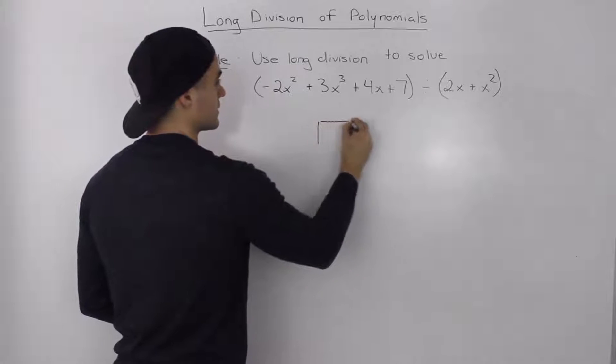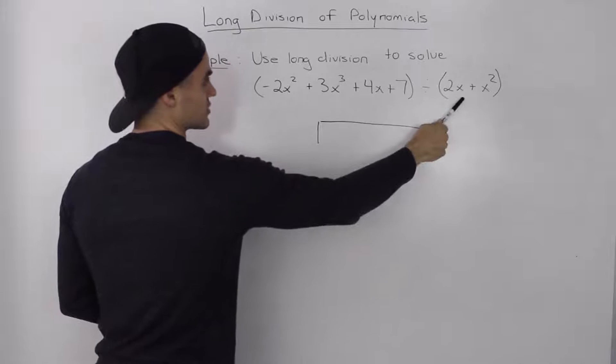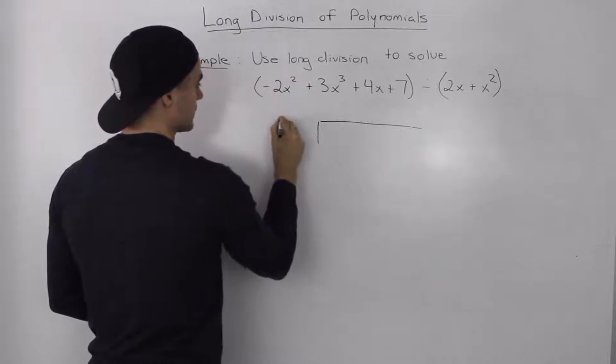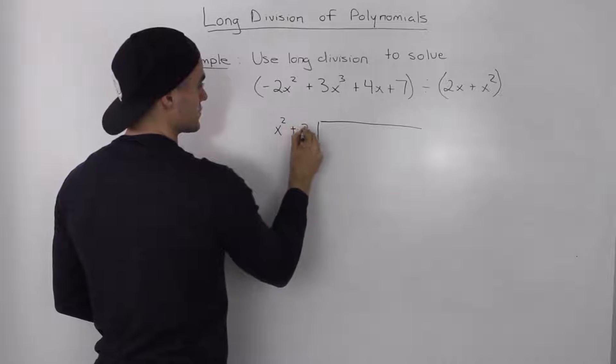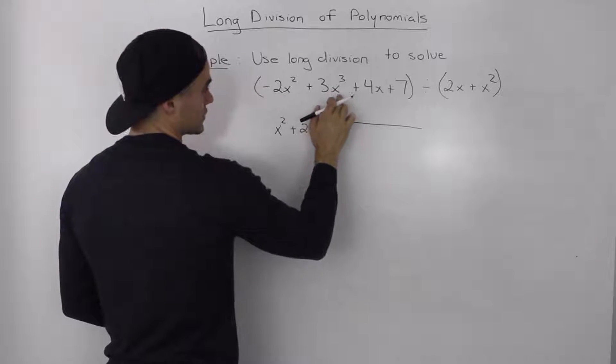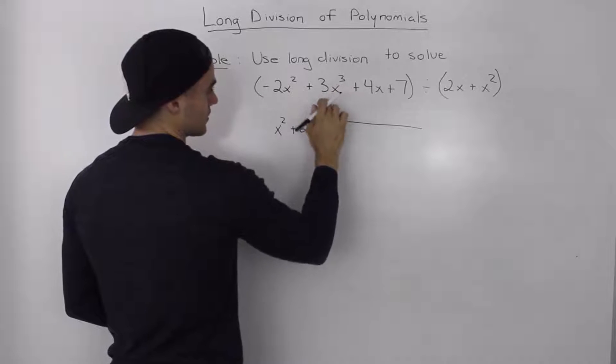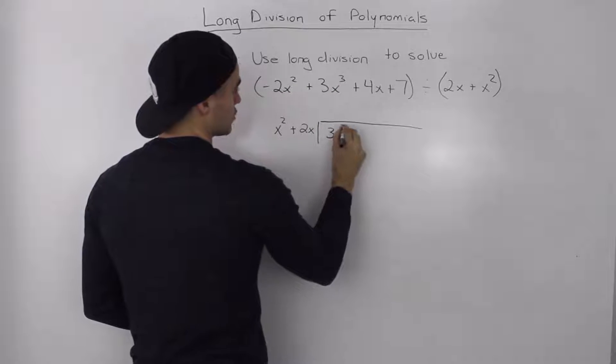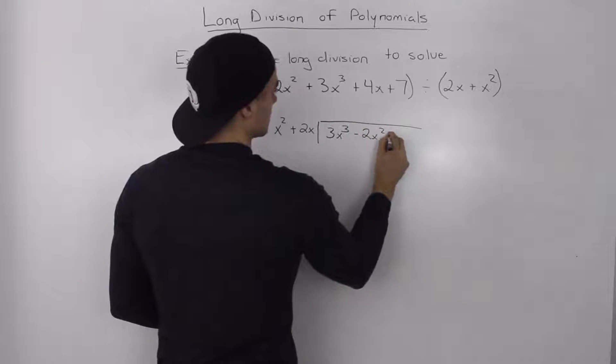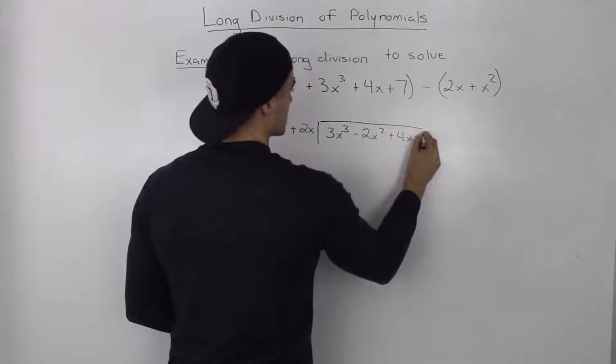So if we rewrite this, let's start with the divisor. The highest degree is 2, so we would rewrite this x squared first plus 2x. And then with the dividend, the highest degree is 3. So we rewrite the 3x cubed first, the next one is this negative 2x squared plus 4x plus 7.